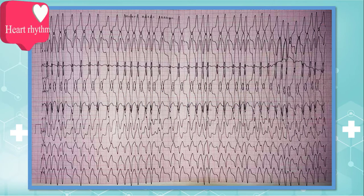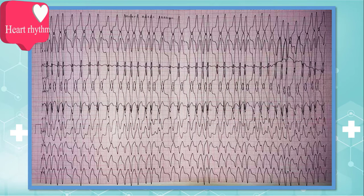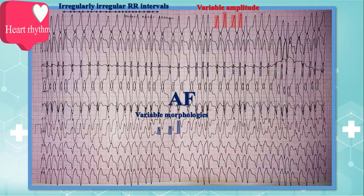Next is cardiac rhythm. Note that in any arrhythmia, the most challenging and debating part of EKG interpretation is analyzing heart rhythm. In the present strip, irregularly irregular RR intervals with no discernible P waves suggest atrial fibrillation. The QRS complexes continuously change in amplitude, duration, and morphology. In conventional AF, we expect to observe similar QRS complexes, while in this strip the complexes continuously vary in duration and morphology, which favors pre-excited AF or AF with accessory pathway.